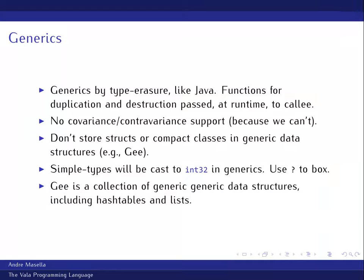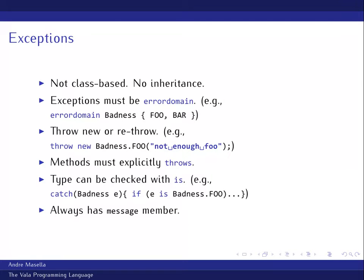Exceptions in Vala are not class-based, so there's no inheritance. They're error domains. For example, an error domain called 'Badness' with two states: FOO and BAR. If you want to throw an exception, you go 'throw new Badness.FOO(message).' You can't pass along other information; you're stuck with this style. Unlike C# and Java's runtime exceptions, you can't just throw without declaring it — you have to explicitly declare what exceptions you throw, otherwise there's no way for the compiler to write the appropriate C. You can check the exception type in your catch block, and there's always a message member.